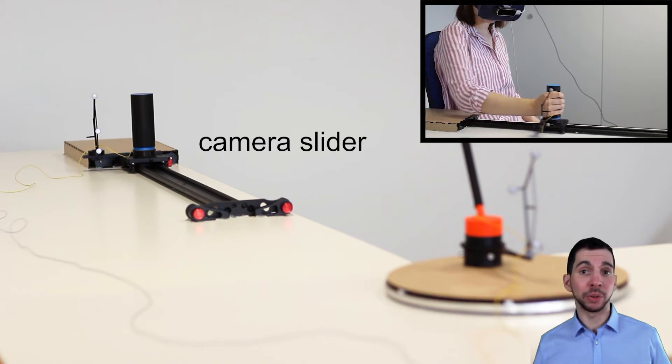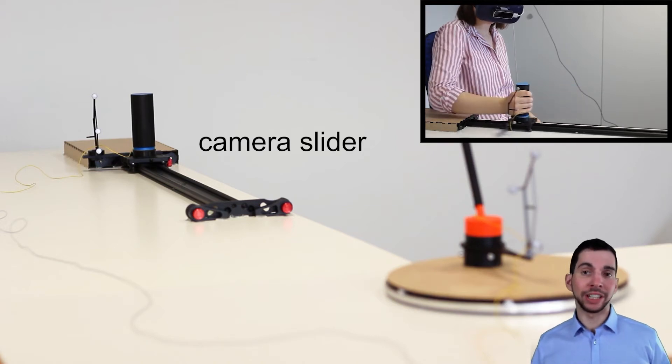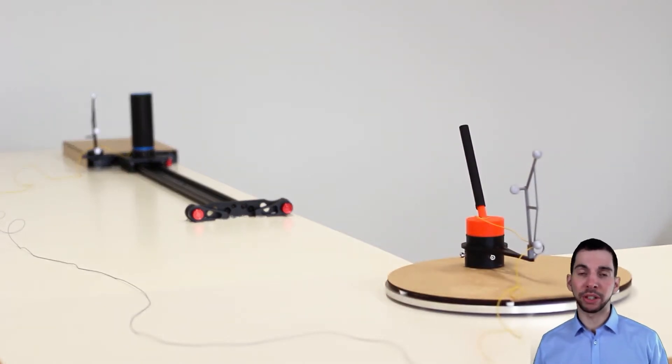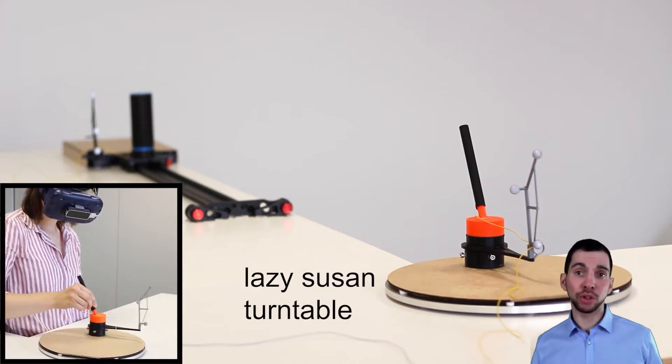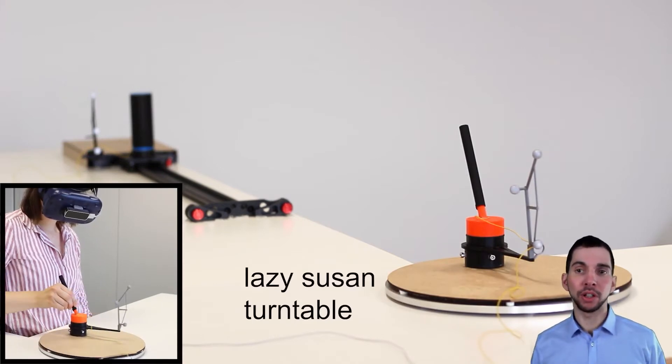To isolate these variables, we restricted participants' movement using a camera slider for the linear movement condition, and a lazy Susan turntable for the circular movement, not allowing any path deviations.